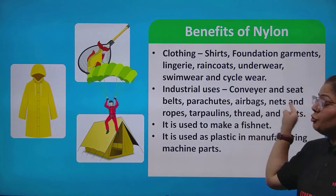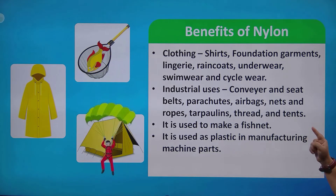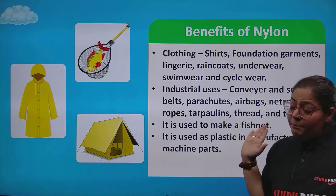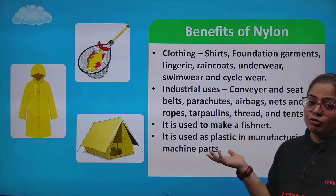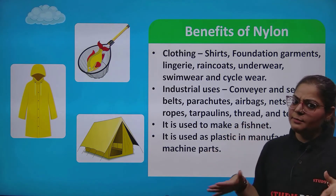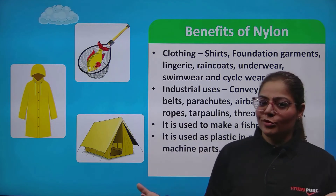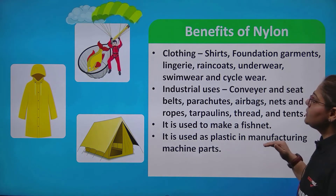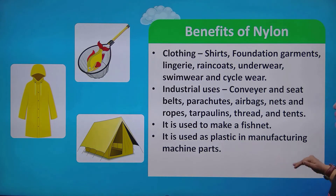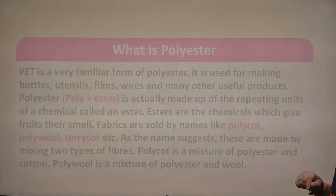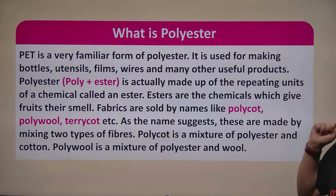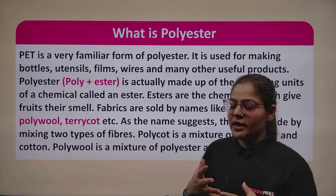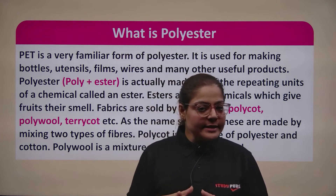Please make a note of all these things because you can compare nylon with rayon, and in your brain you can easily find the differentiation of where each is used. Now let's talk about the next category — polyester. Nylon and rayon you have learned, but polyester you have not yet fully learned. Just by the name you can get an idea. PET is a very familiar form of polyester, used for making bottles, utensils, films, wires, and many other useful products.